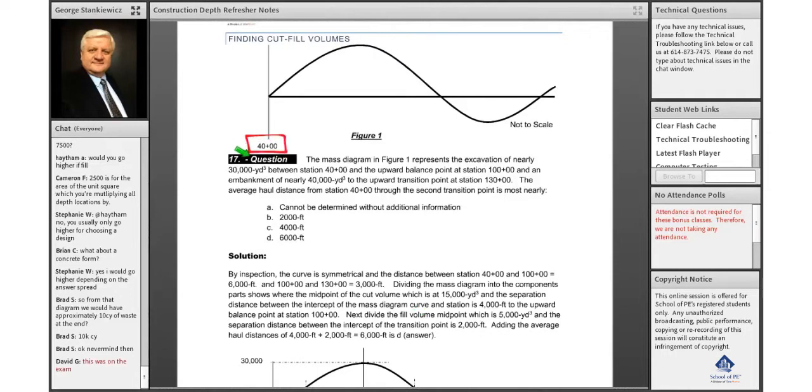We're at station 40 right here, and we're told that this volume is 40,000, is 30,000 cubic yards. So we have 30,000 cubic yards of material here, so that's our maximum amount. So we have our 30,000. The mass haul diagram represents the excavation or our cut of nearly 30,000 cubic yards between station 40 and the upward balance point at 100. So this is our station 100 now.